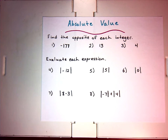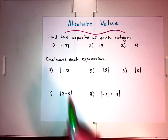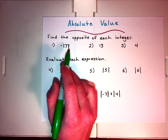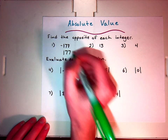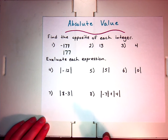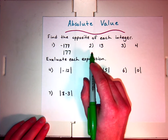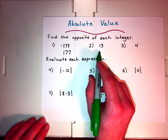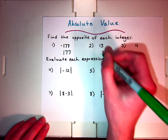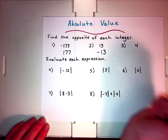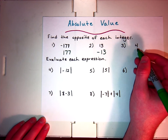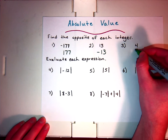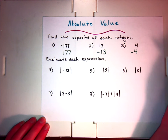The first section says find the opposite of each integer. The opposite of negative 177 — well, that's negative, so the opposite is the positive form. For number two, it's 13. 13 is positive, so the opposite is its negative form. For number three, we have the value 4. That's positive, so the opposite is its negative form.